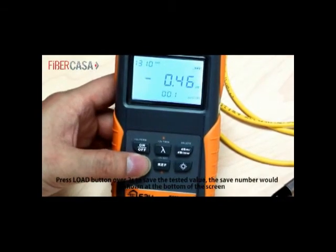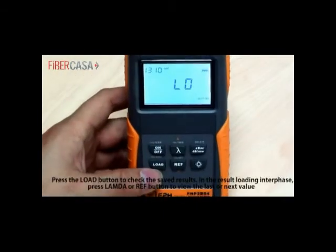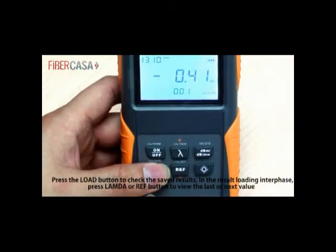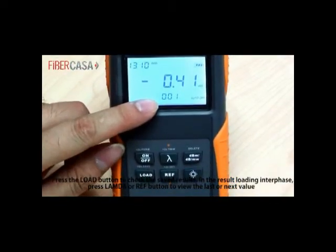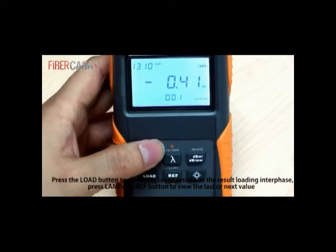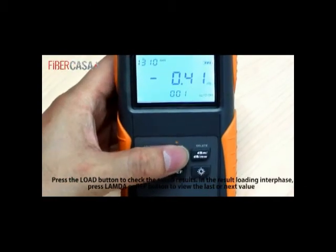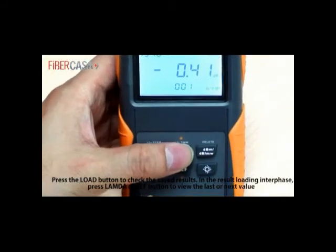Press LOAD button over 2 seconds to save the tested value. The saved number would assume at the bottom of the screen. Press LOAD button to check the saved results. In the result loading interface, press LAMBDA or REF button to view the last or next value.